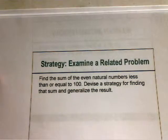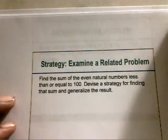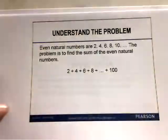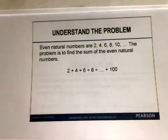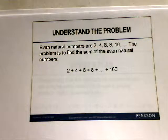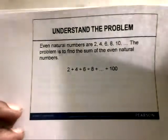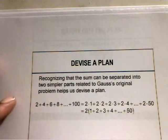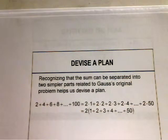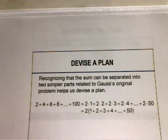Here we want to examine a related problem, which is another strategy. In this example, we want to find the sum of the even numbers less than or equal to 100. Devise the strategy for finding that sum and generalize the result. We go through that four-step process. We understand the problem: even numbers are 2, 4, 6, 8, 10, and so on. The problem is to find the sum: 2 plus 4 plus 6 plus 8 and so on up to 100. Next, we devise a plan, recognizing that the sum can be separated into two simpler parts related to Gauss's original problem.